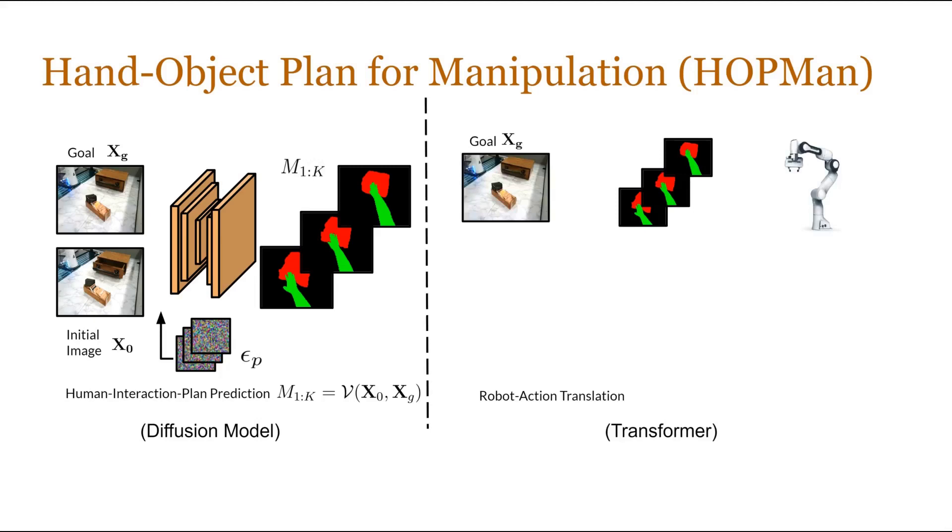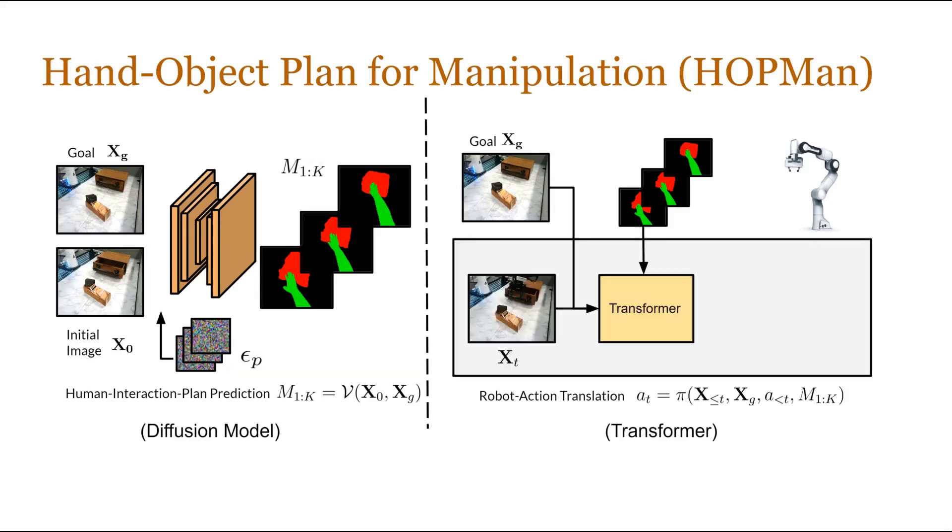We instantiate the robot action translation model as a transformer in the form of a closed-loop policy. This model takes as input the goal image, the predicted human plan, and the observations at each time step, along with some history. The output of the transformer is a series of actions, and we execute the first action and replan.